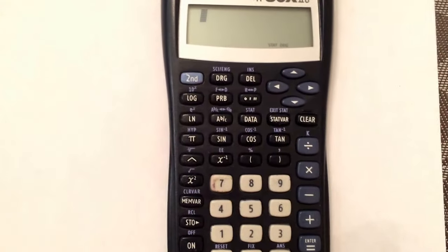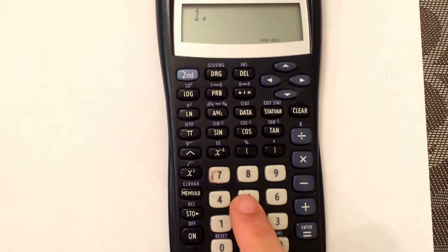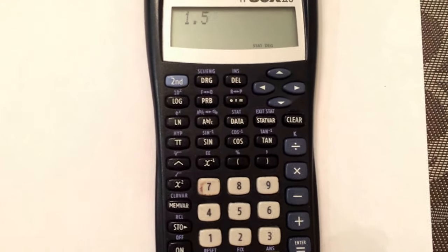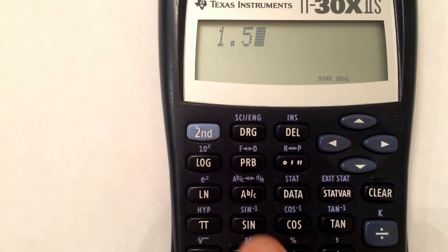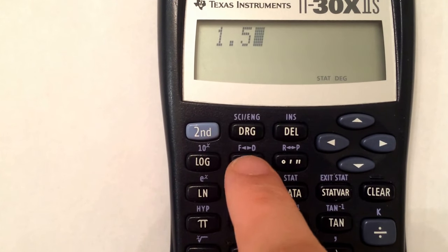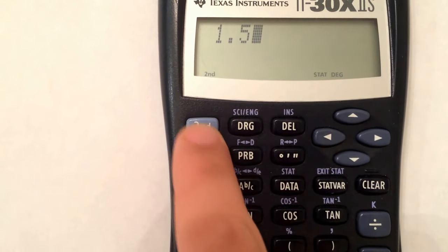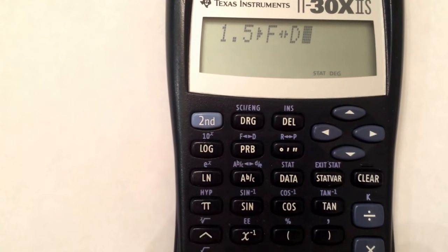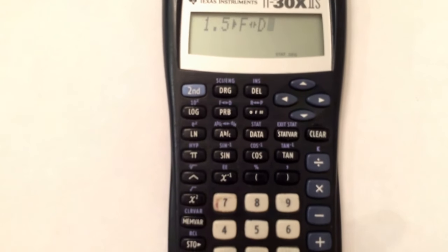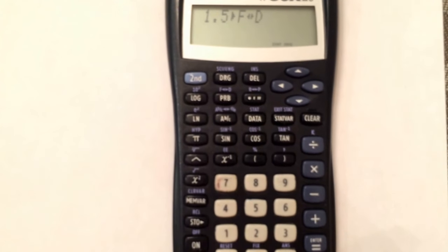First thing you're going to do, enter 1.5 on your calculator. Then you're going to see on top of the PRB button, right here, there's an F to D. So press second function, F to D, and that's going to give you the decimal to the fraction.